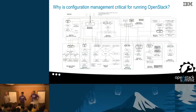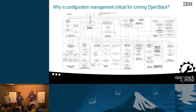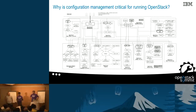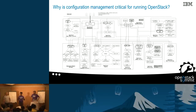One look at this chart will tell you why configuration management is critical for running OpenStack. For those of you who have been deploying OpenStack and giving OpenStack deployments to end users, you know the pain in creating consistent OpenStack deployments involving Cinder, Neutron, Compute, Controller, Glance. And then add functionalities like Heat, Ceilometer, Ironic, Ceph, or moving forward Magnum. You are looking at a system as big and complex as anything you want to deploy.